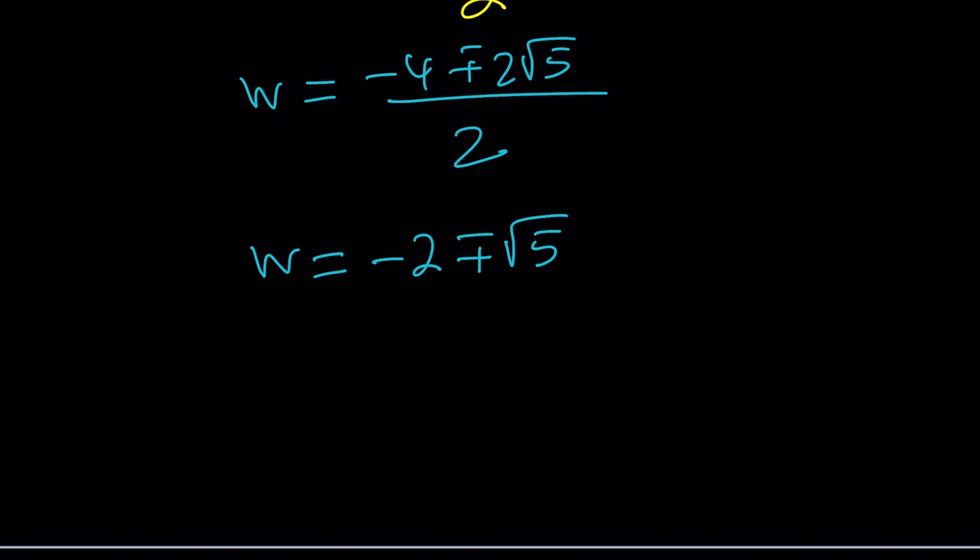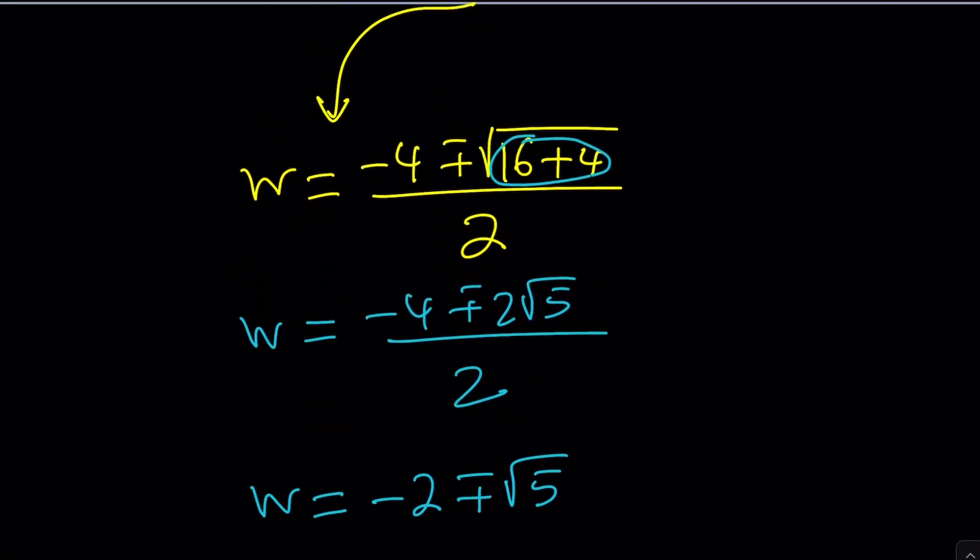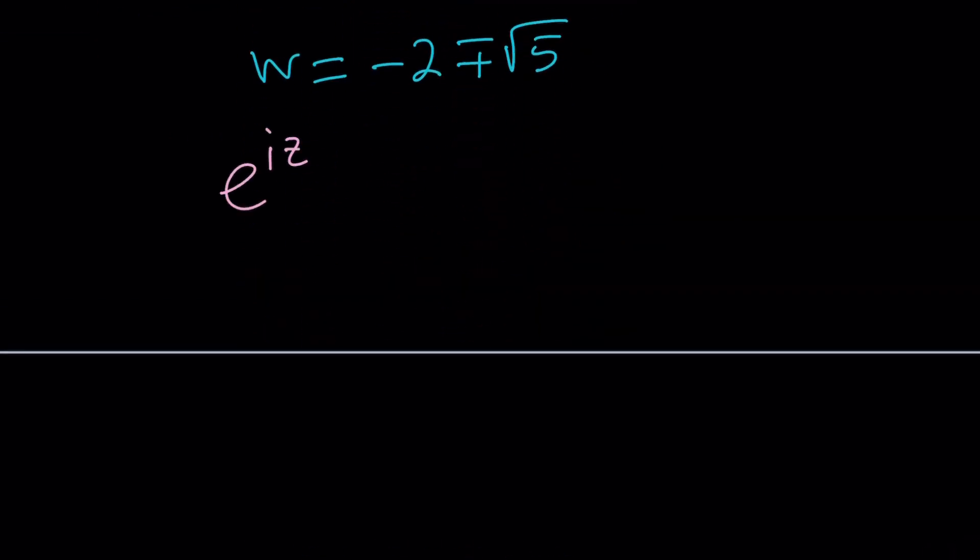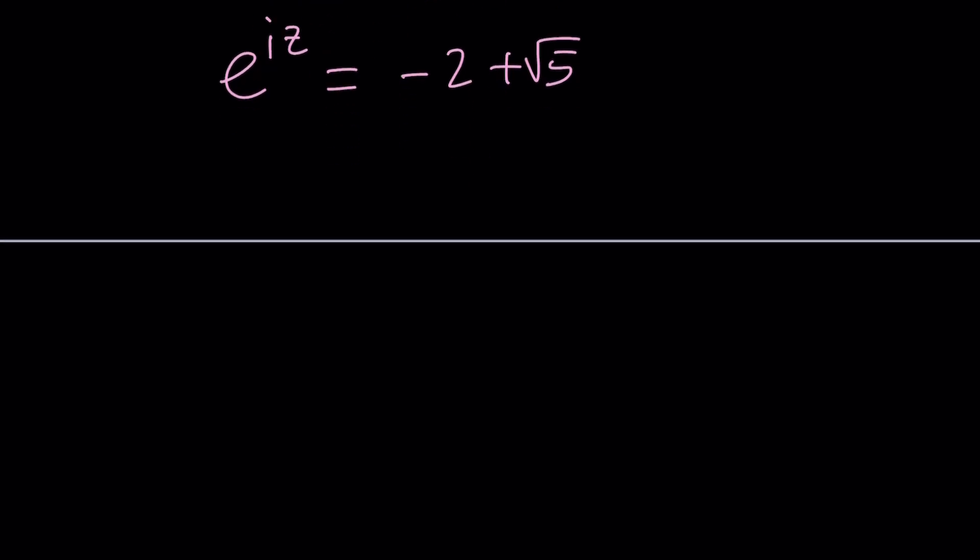But what we need to do now is to solve for z. What is z? Make sure you keep track of things. E to the i z is w. So this is e to the i z. E to the i z is negative 2 plus root 5. Let me just start with one of them because the other one is going to be so similar. So from here we're going to go ahead and... So this is supposed to be e to the power i z. W is e to the power i z. So let's go ahead and set it equal to that. And how do you solve for z? You can use natural logs.